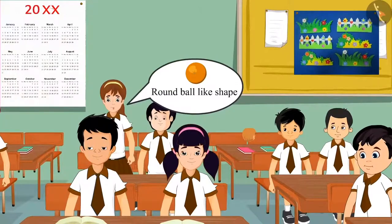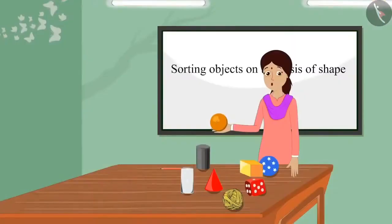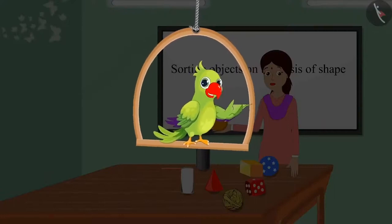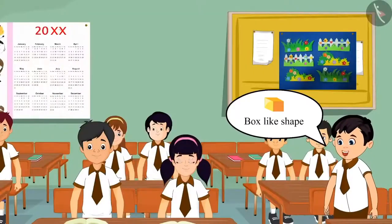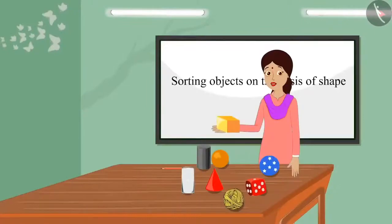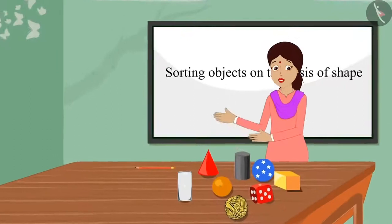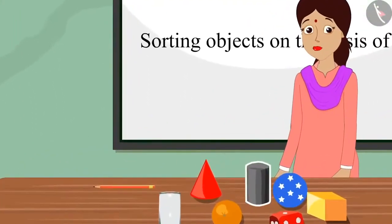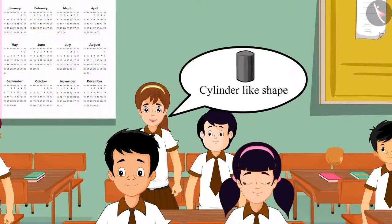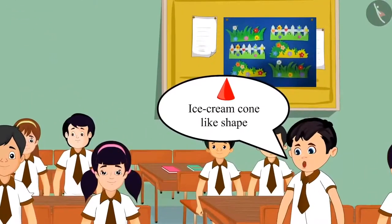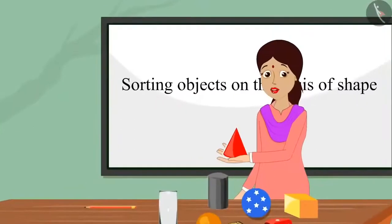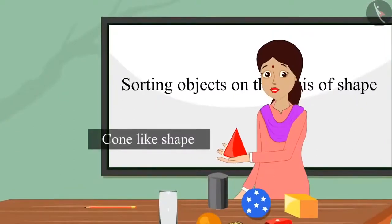Teacher, this is a round ball-like shape. The teacher now showed another item and asked: Children, what does this object look like? Teacher, this has a box-like shape. Well done Chotu — well said, this has a box-like shape. Children, now can you recognize the shape of this object? Teacher, it looks like a cylinder. Very good Aarti — well said, this has a cylinder-like shape. Teacher, this has ice cream cone-like shape. Very well Chotu — well said, this has a cone-like shape.